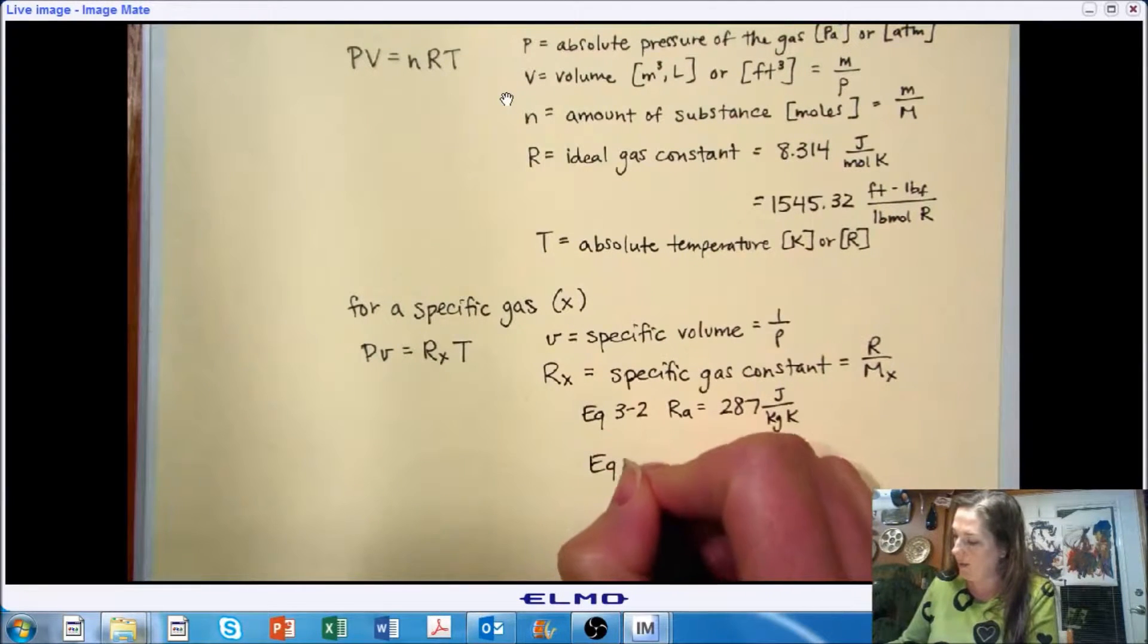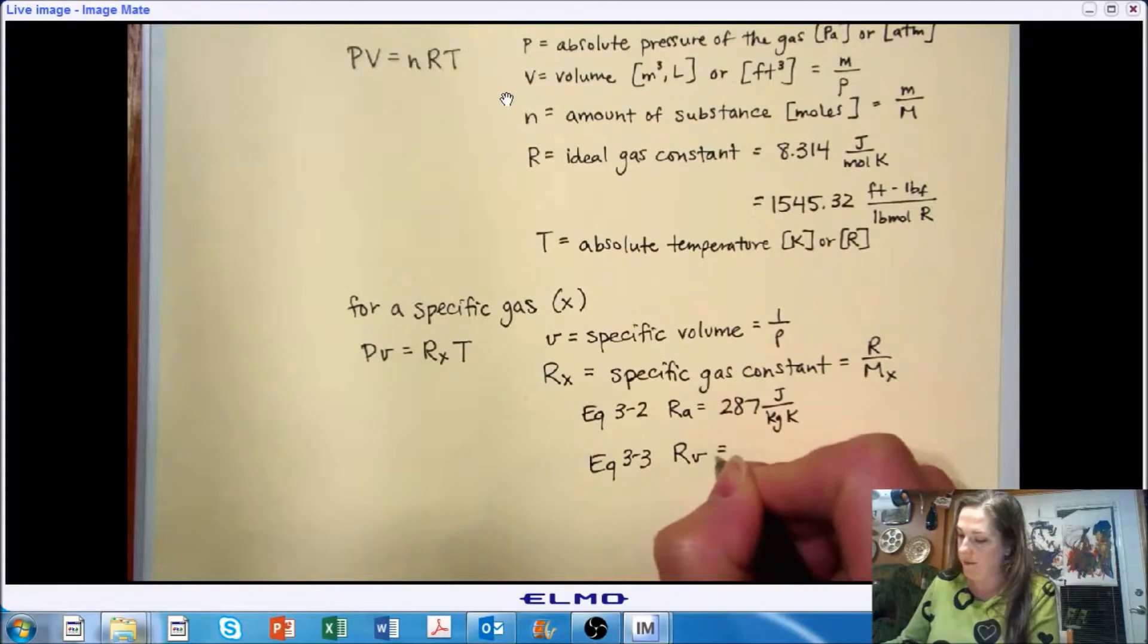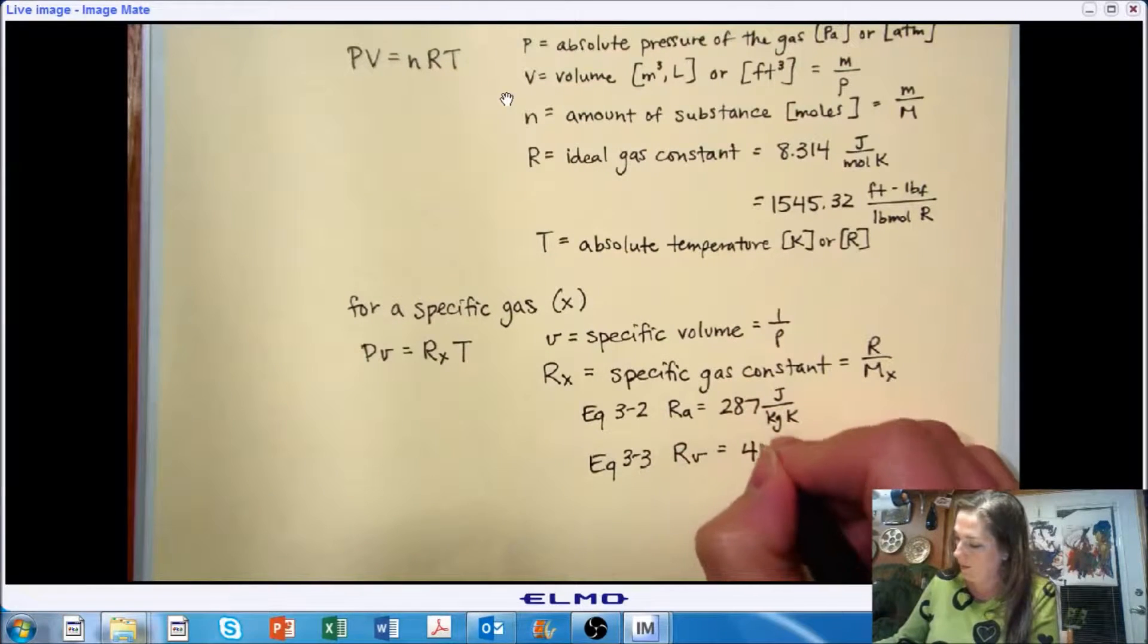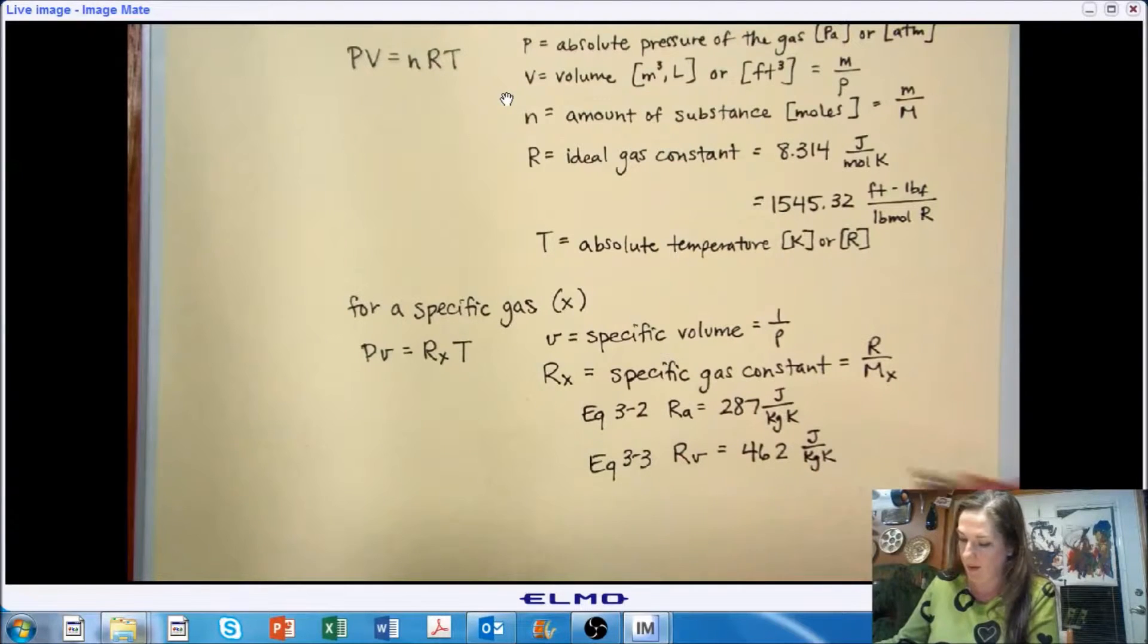Or equation 3.3, which is the specific gas constant for vapor, for water vapor, which is 462 joules per kilogram Kelvin.